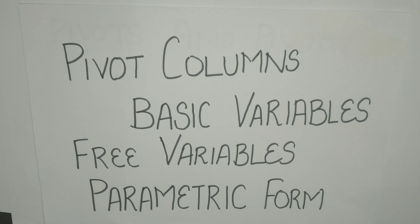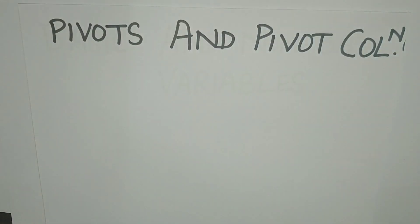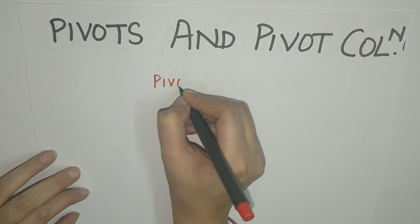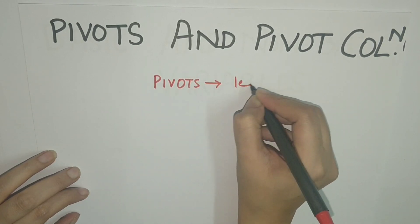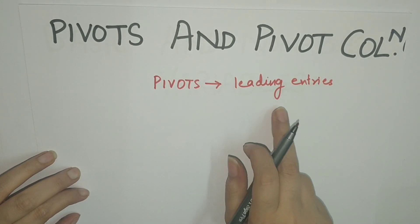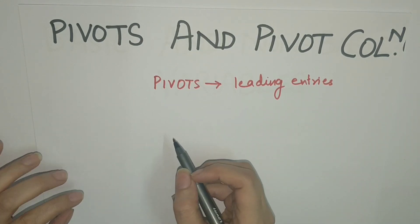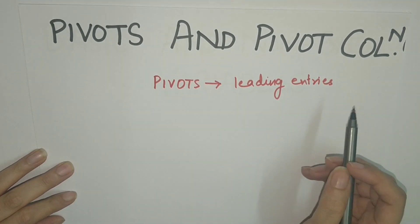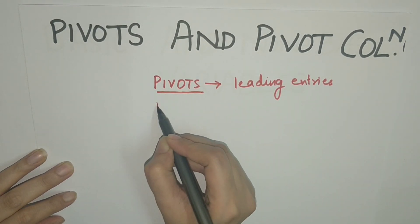In this lecture we will discuss the concept of pivots, pivot columns, basic variables, free variables, and expressing the solution of a system of linear equations in parametric form. In previous videos we discussed the echelon form of a matrix and leading entries. Pivots are the leading entries of non-zero rows — that is, the first non-zero entry of each non-zero row. The columns containing pivots are called pivot columns.